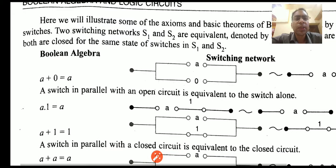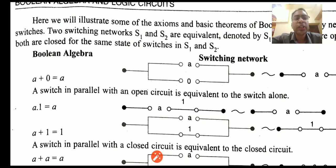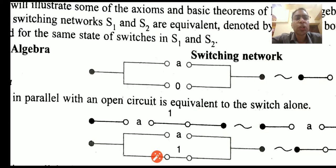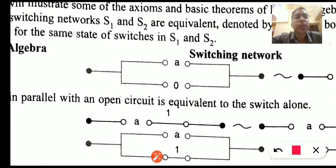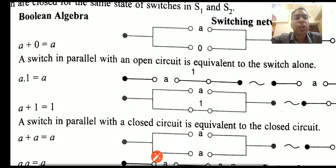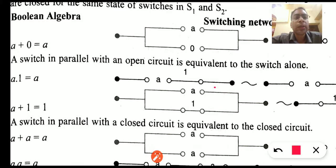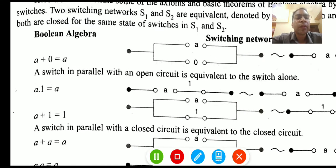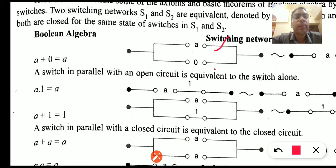Let us see the circuits of the axioms of the Boolean algebra. The plus operation is represented by a parallel switch, so this is a parallel switch. The AND operation is indicated by a sequential switch. So, a plus 0 equals a — the circuit shows a and 0 kept in parallel form.